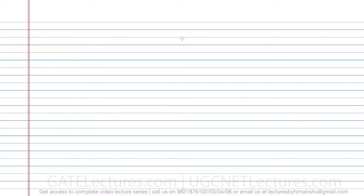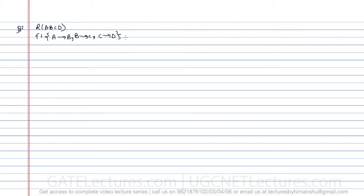In this video we are going to discuss examples where some relations are given along with their decompositions, and we want to find whether that decomposition is lossless or not. The first question gives us the relation R(A,B,C,D) and the functional dependencies: A determines B, B determines C, and C determines D.